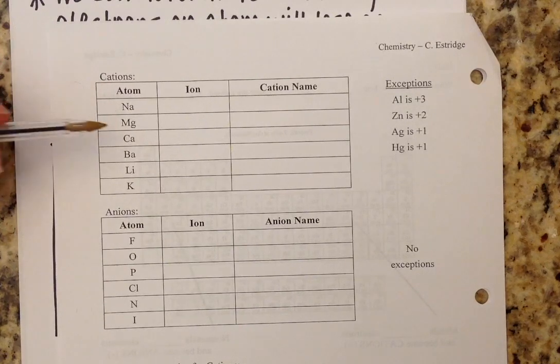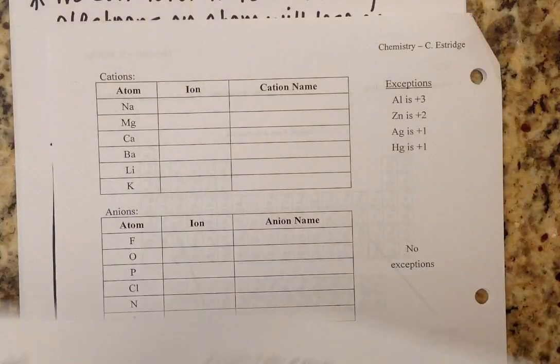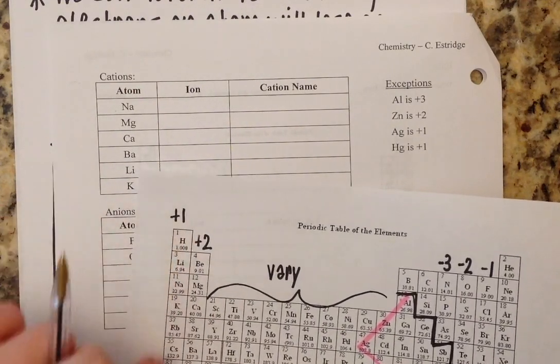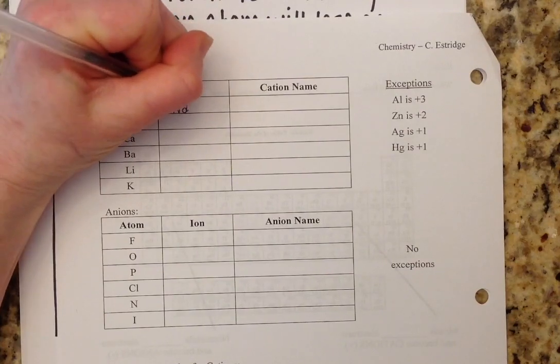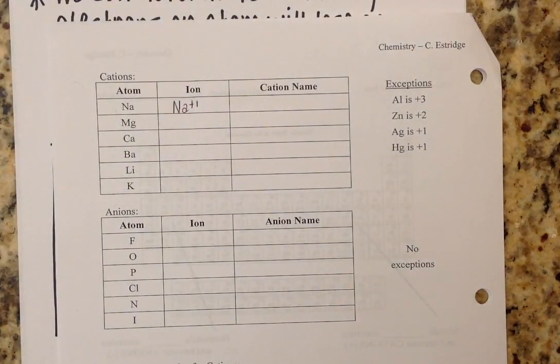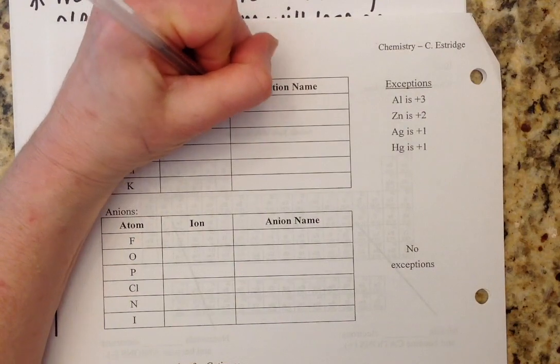But when sodium becomes a cation, because it is located in this first column, we know it has a plus one charge. So the sodium ion looks like this, and we would refer to that as sodium ion.